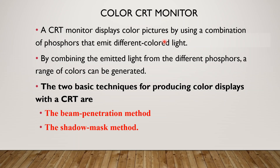There are different colored phosphors available. By using combinations of different colored phosphors — for example, red color phosphor emits red light and green color phosphor emits green light — by combining the emitted light from different phosphors, a range of colors can be generated.